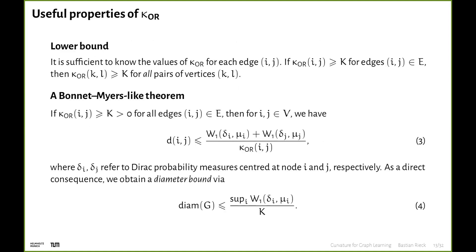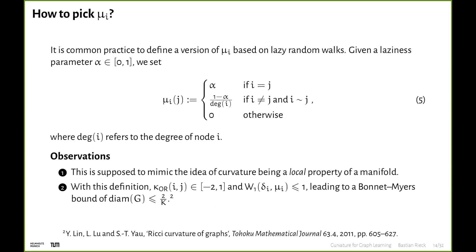This curvature measure has nice properties: it suffices to know the curvature values for each edge — if we have a lower bound for edges, that is also a lower bound for non-edges in the graph. Moreover, we get a Bonnet-Myers-like theorem that gives us a bound on the diameter.